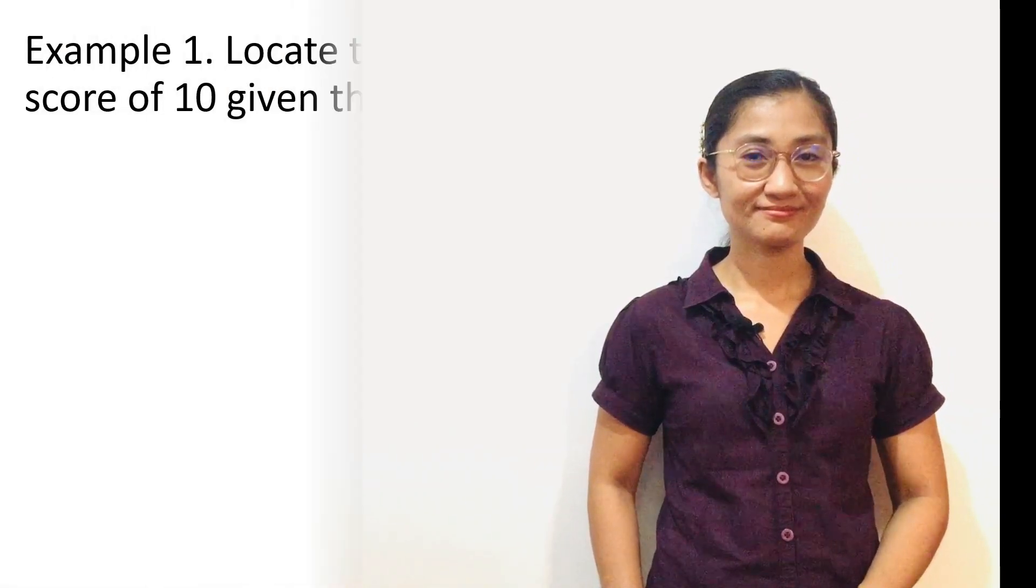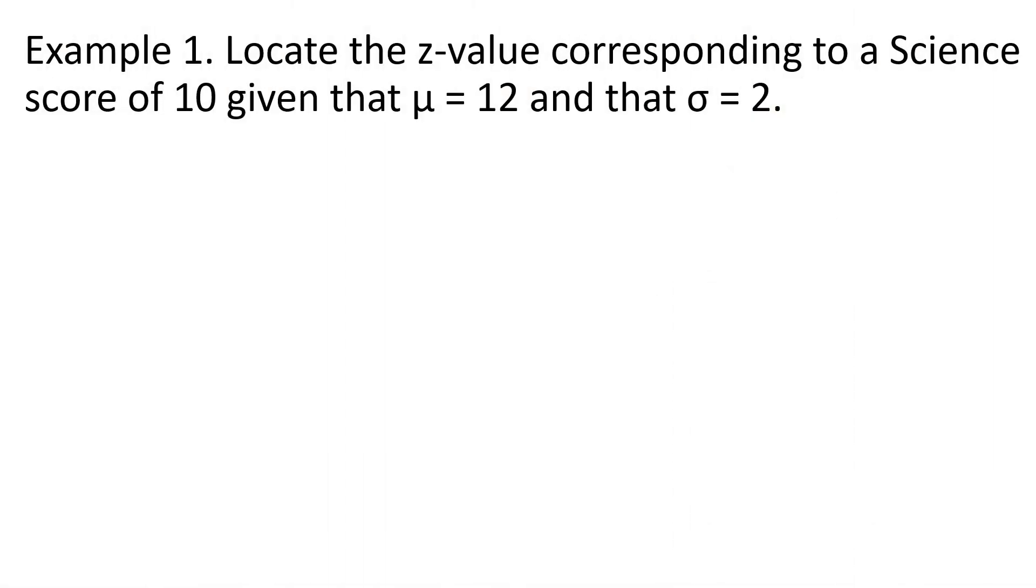Example 1, locate the Z-value corresponding to a science score of 10 given that the population mean is 12 and that the population standard deviation is 2. We are going to use the formula for Z-score for population.